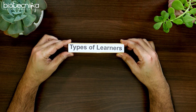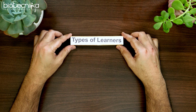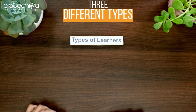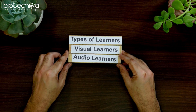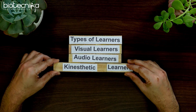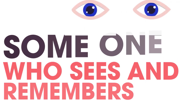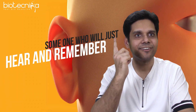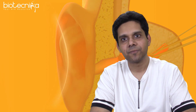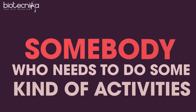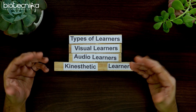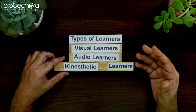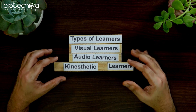Let's start with the first thing: types of learner. Scientists have defined various types of learners and categorized three different types. The first one is a visual learner — someone who sees and remembers. The second one is an audio learner — someone who will just hear and remember; just listening helps them remember. The third is a kinesthetic learner — somebody who needs to do some kind of activity to remember better and recall faster.